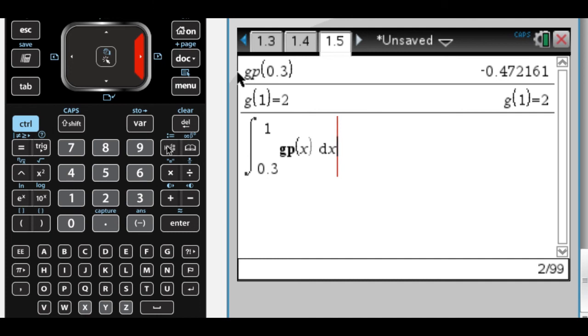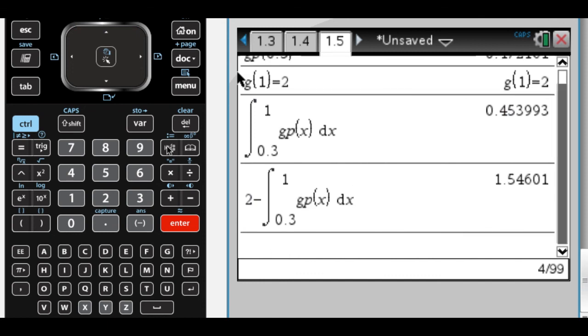that's going to give me the total change in the function from 0.3 to 1. So let's find out what that total change is. Okay, so that's the total change. So what I want to do is I really want to do 2 minus the integral from there to there to kind of backtrack to get 1.546. So that's g of 1 minus the integral from 0.3 to 1 gives you g of 0.3.